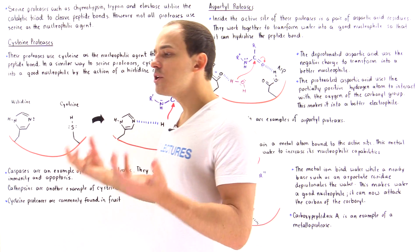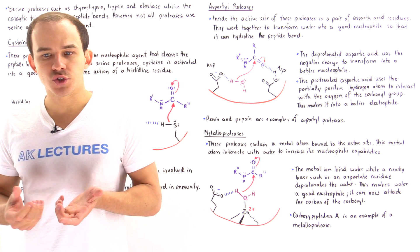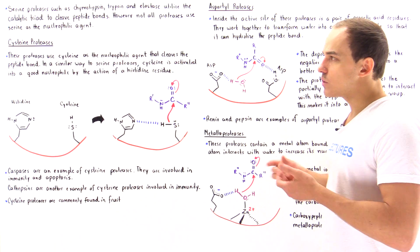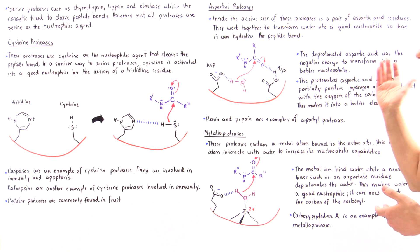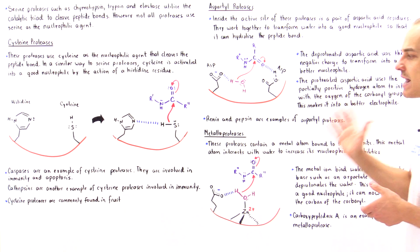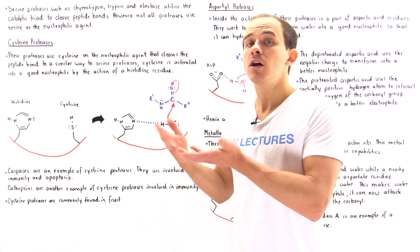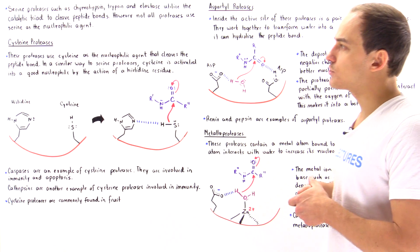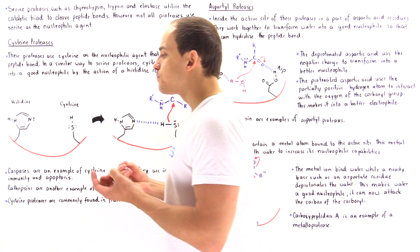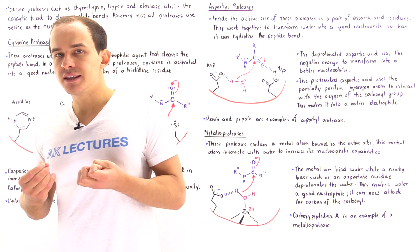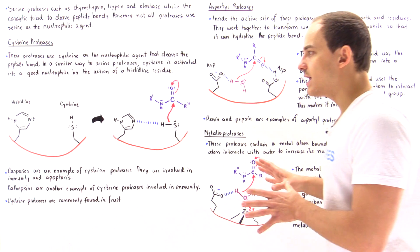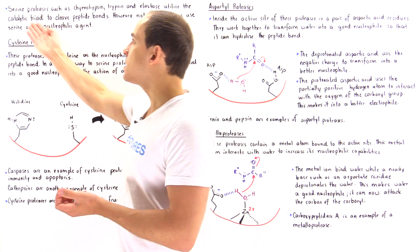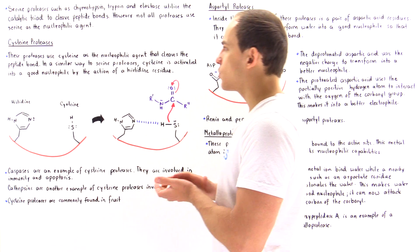Now, what about the other categories of proteases? We not only have serine proteases, but we also have cysteine proteases, aspartyl proteases, metalloproteases, and other examples we won't focus on in this lecture. The question is: what exactly is the mechanism of these other proteases, and how does it differ from or compare to the mechanism inside serine proteases?